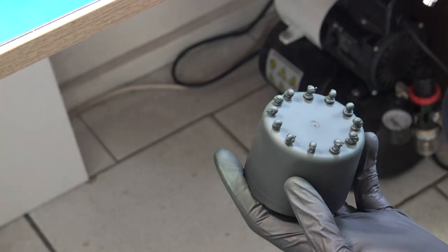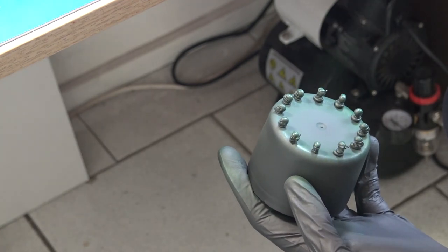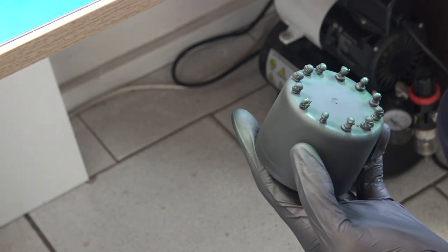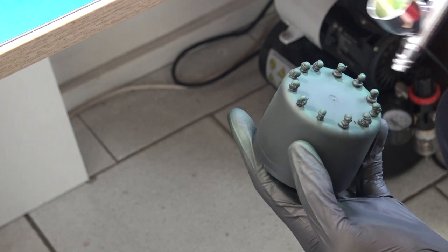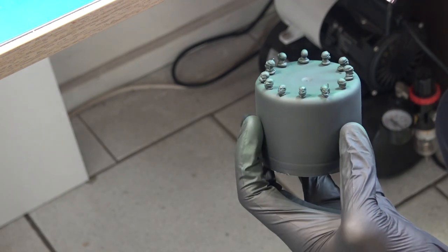As you can see here, the process is basically the same as when doing one head. You just need to stick all the heads to some kind of stand, and I'm using white tack for that.